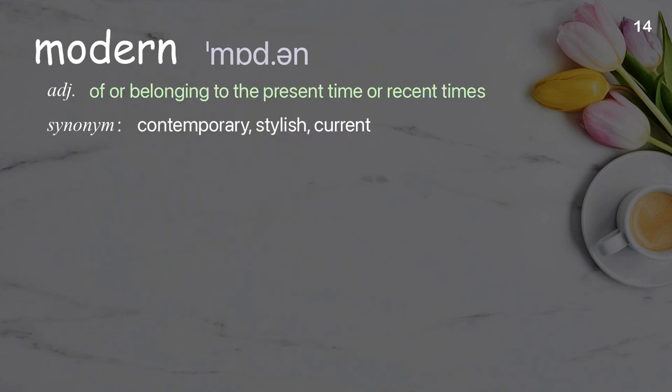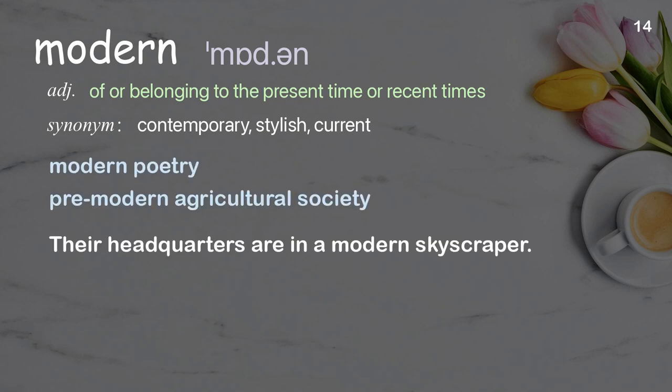Modern: Of or belonging to the present time or recent times. Examples: Modern poetry. Premodern agricultural society. Their headquarters are in a modern skyscraper.